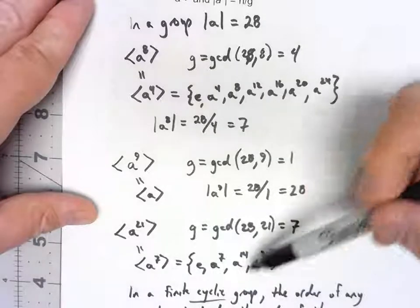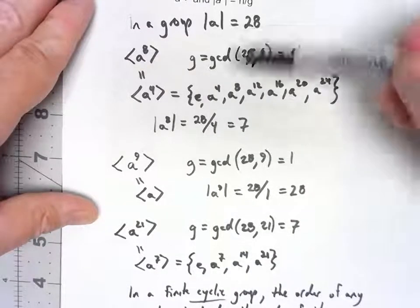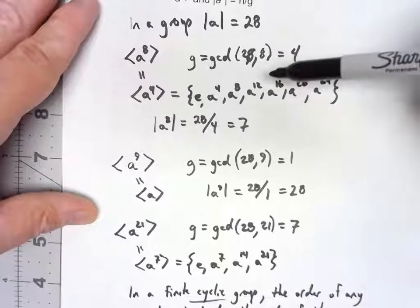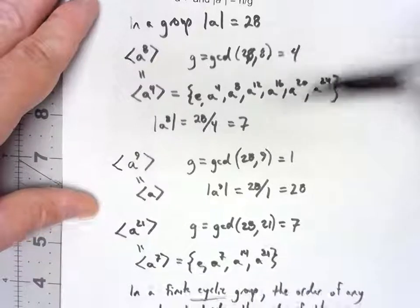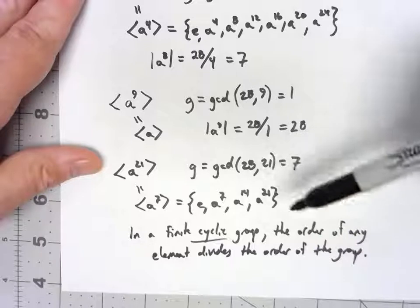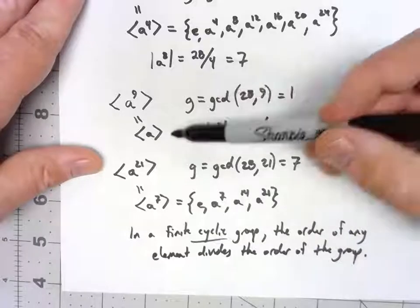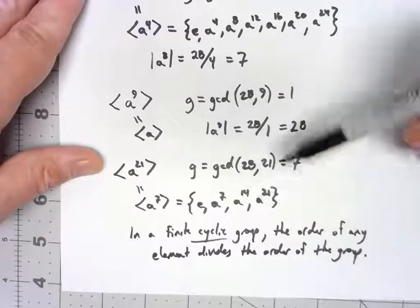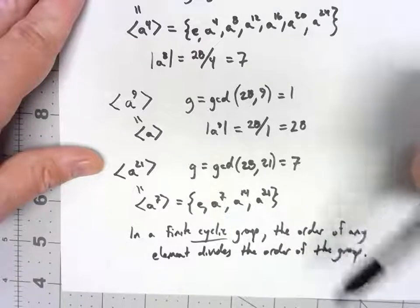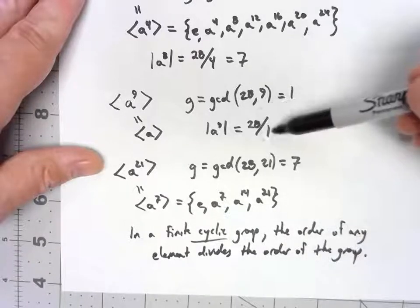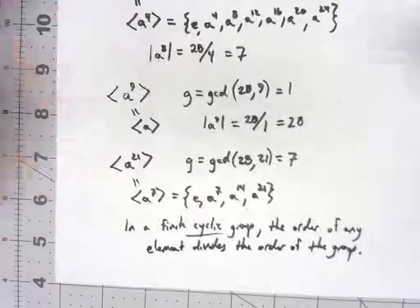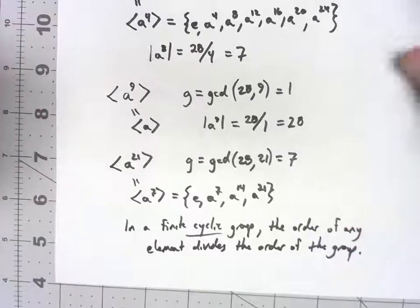Because any element in a cyclic group can be written as the generator to some power, that power is the order of the group, then doing this whole GCD thing, we know the order of any element can be written as the order of the group divided by some GCD. Therefore, it has to divide into the order of the group.